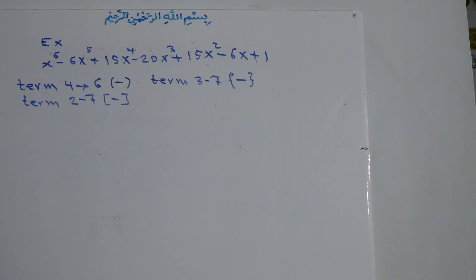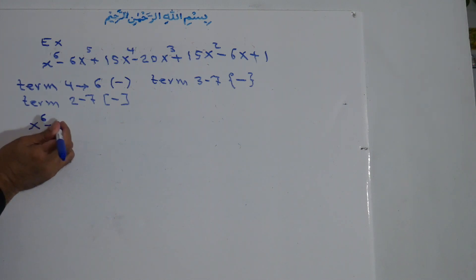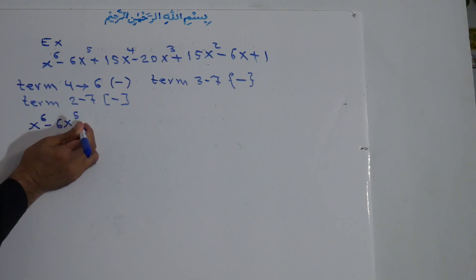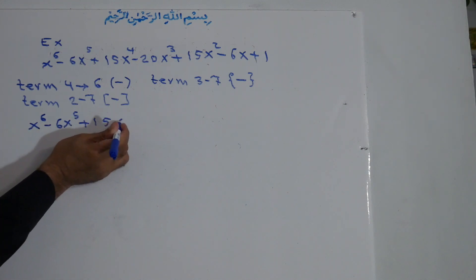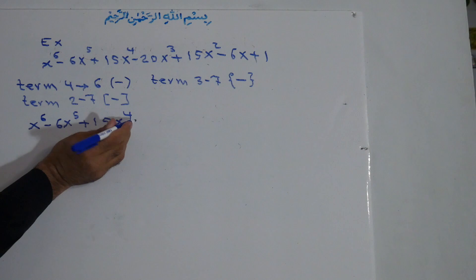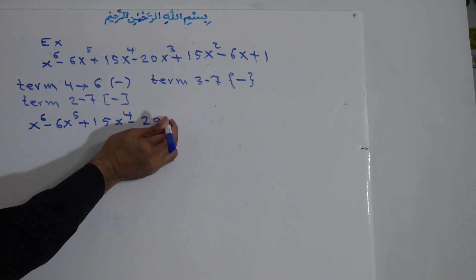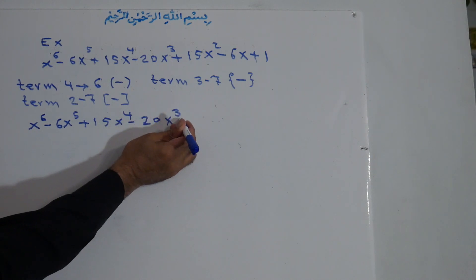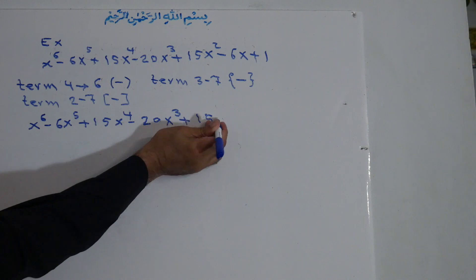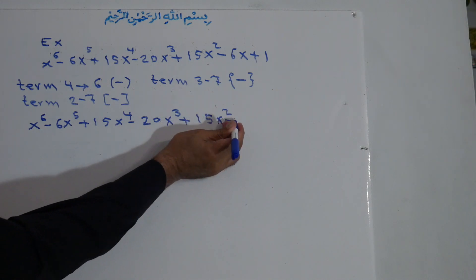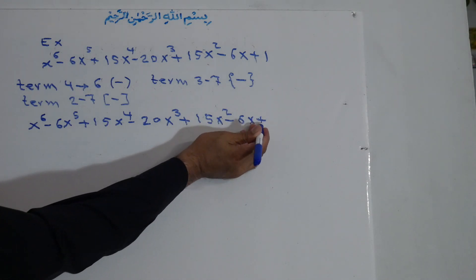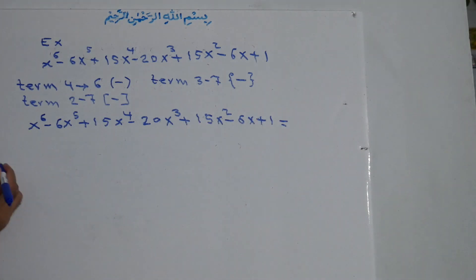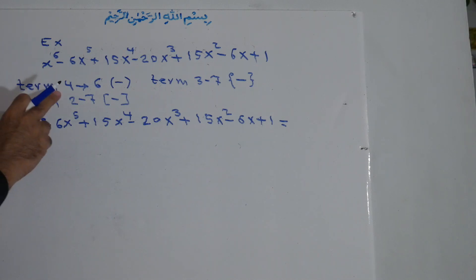This means that the signs inside each bracket will be changed. Now we write the polynomial: x to the power of 6, minus 6x to the power of 5, plus 15x to the power of 4, minus 20x to the power of 3, plus 15x to the power of 2, minus 6x, plus 1. This is equal to the following. First, we start with the small bracket from term 4 to 6.